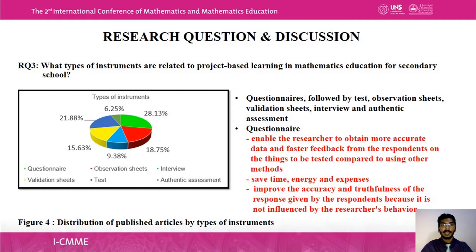The third research question is: what types of instruments are related to project-based learning in mathematics education for secondary school? The highest percentage — 28.13% — shows that questionnaires were most commonly used, followed by tests, observation sheets, validation sheets, interviews, and authentic assessment. Questionnaires were favored because they enable more accurate data and faster feedback from respondents, saving time, energy, and expenses, and are not influenced by researcher behavior.